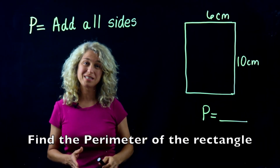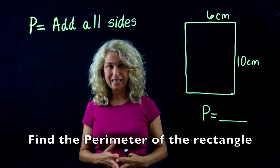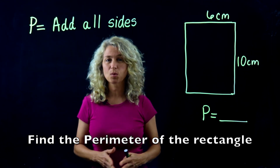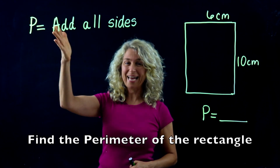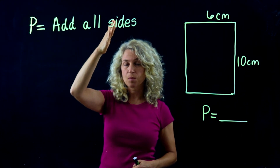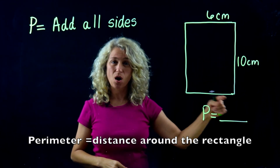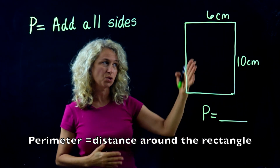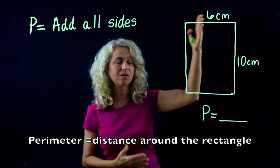All right, so we're going to explore perimeter together today. Notice perimeter — all you have to do is add all the sides. Perimeter means the distance all the way around a figure. So this is a rectangle and we're given a length and a width.